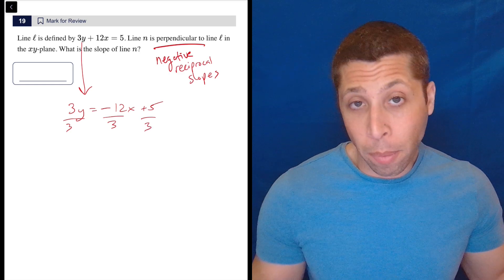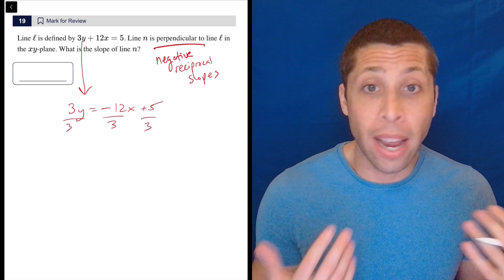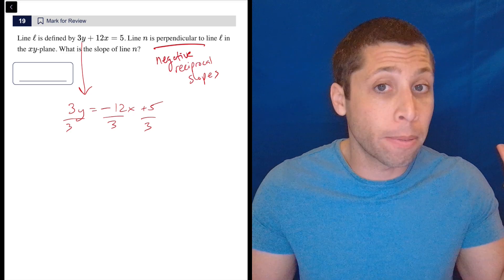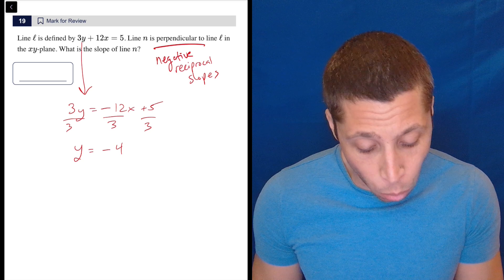And technically, the 5 gets divided by 3 as well. But when it comes to perpendicular lines, I do not care about the y-intercept ever. It could be the same, it could be different. It doesn't interest me. So I'm just going to ignore it. But the real thing I care about is that the slope is negative 4.